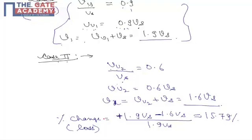So percent change is 1.9 Vs minus 1.6 Vs upon 1.9 Vs. So we are computing loss, it has to be minus.